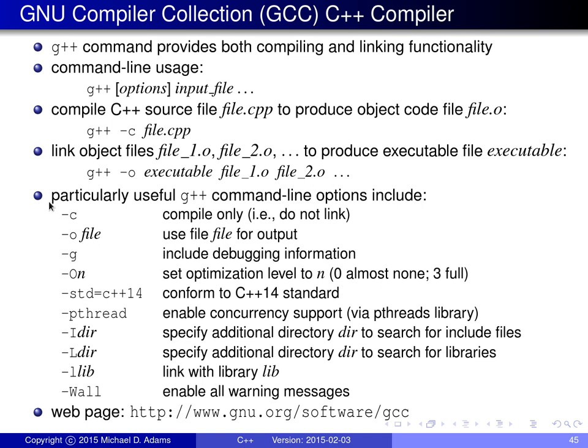The G++ command has many options — literally hundreds. The most basic ones are: -c, which specifies compile-only as opposed to linking; -o, used to specify the output file; and -g, used to specify that debugging information should be included in the object or executable files produced. This is extra metadata used by, for example, a symbolic debugger.